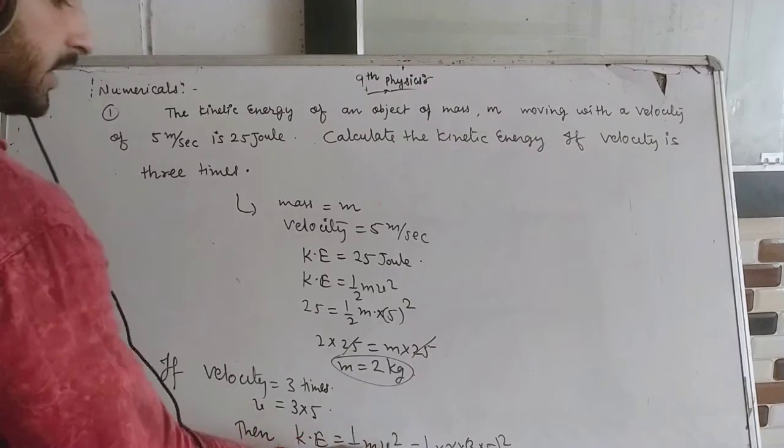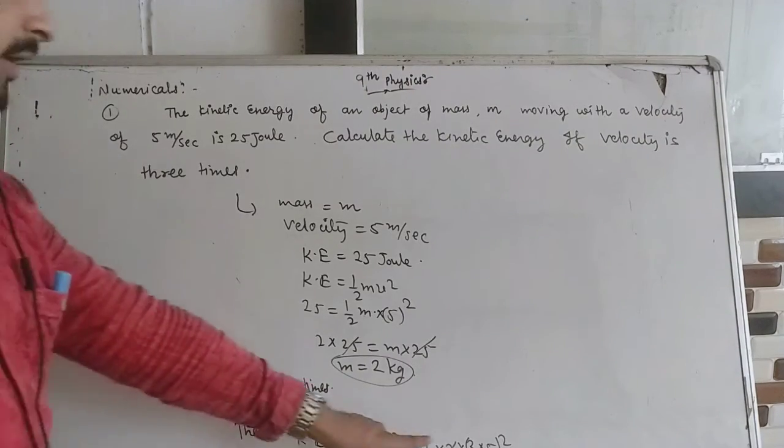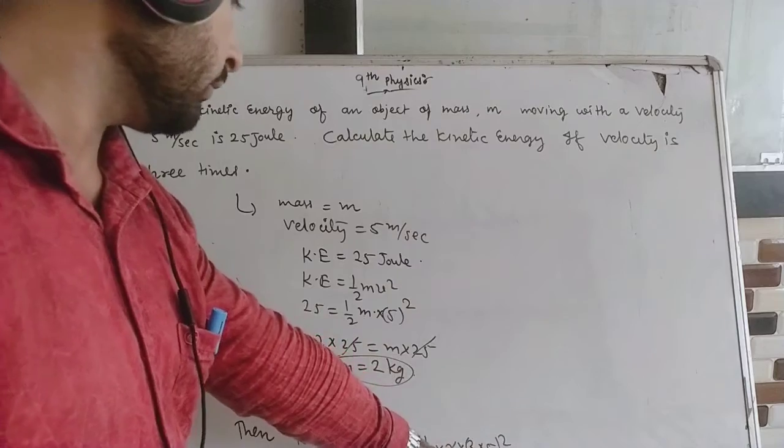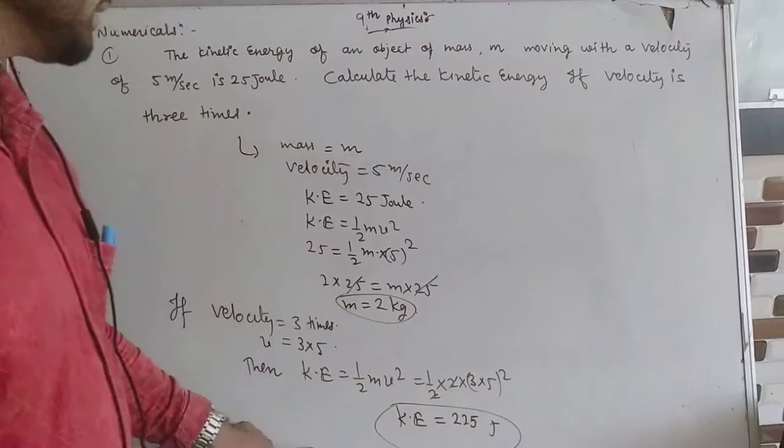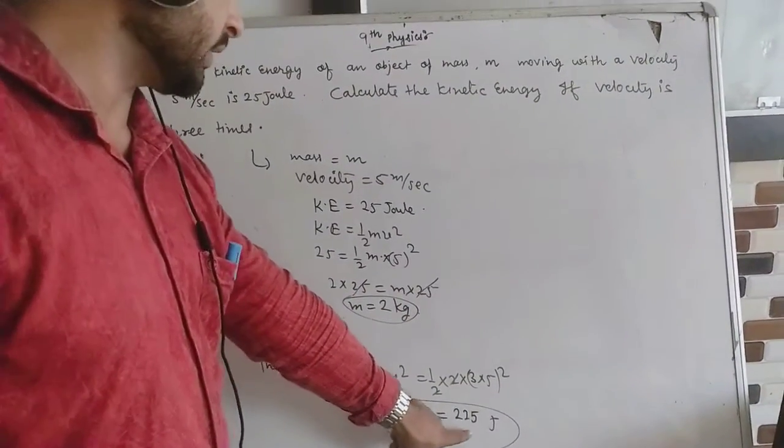Half times m, mass is 2, velocity 3 times 5 equals 15, whole squared. Kinetic energy equals 225 joules.